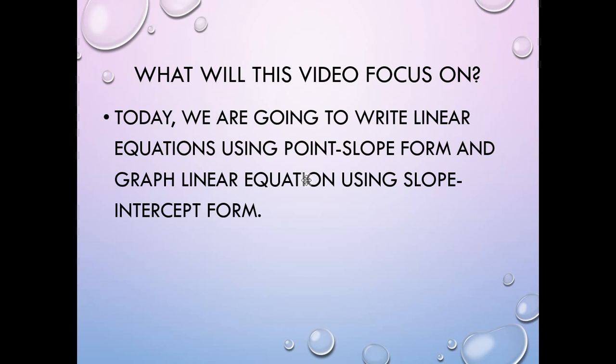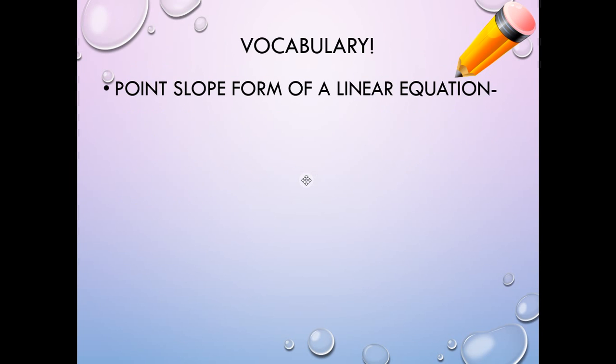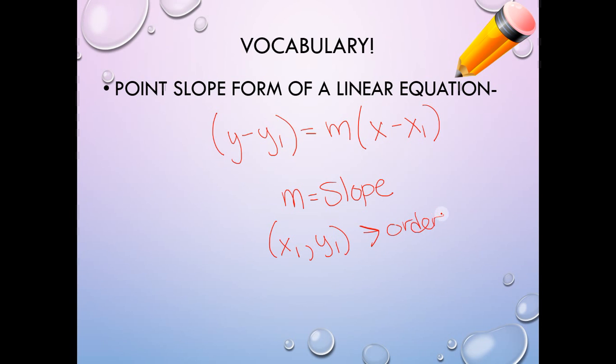This video is going to focus on how to write linear equations using point-slope form. Some vocab you're going to want to have: point-slope form of an equation. What this looks like is y minus y1 equals m times x minus x1. m is your slope, just like last time,